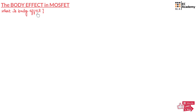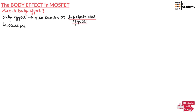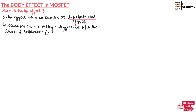First, let us understand what is body effect. The body effect, which is also known as substrate bias effect, occurs when there is a voltage difference between the source and substrate — denoted as VBS — which changes the threshold voltage VT of the MOSFET.